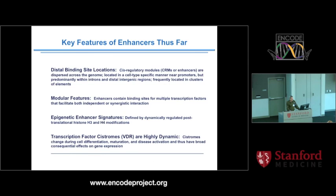Key features of these enhancers thus far: distal binding site locations, modular features where multiple transcription factors can be bound, and epigenetic enhancer signatures at these sites. Most interesting is that transcription factor systems are highly dynamic — not only in the differentiation I've shown you, but clearly also in maturation and disease activation — and they have a major consequence on gene expression.